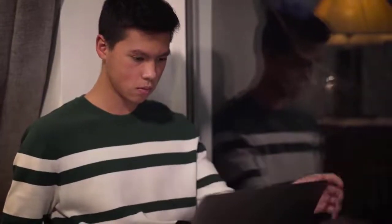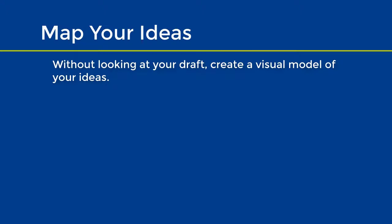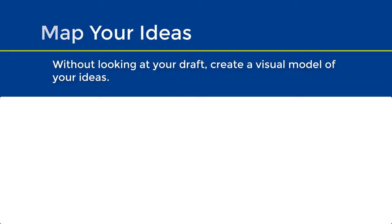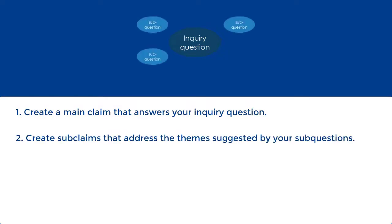After having drafted your paper, or most of it, you'll want to take a step back to look at the structure of it. There are a few different ways we can go about this — experiment with these techniques to see which ones work best for your own process. The first technique is to map out your ideas without looking at your draft. Write down your main claim or central thesis, or that answer your central inquiry question. Then write out your sub-claims that address various aspects implicated by your thesis, or that answer the themes suggested by your sub-questions.